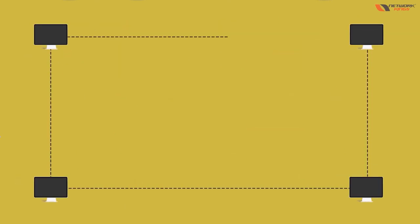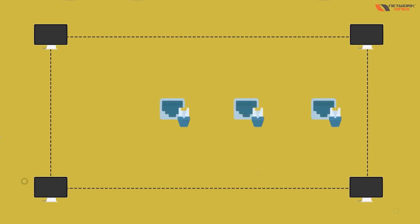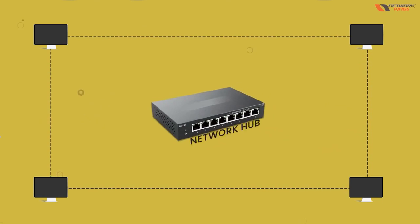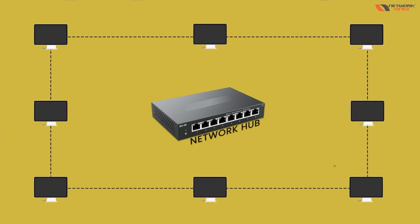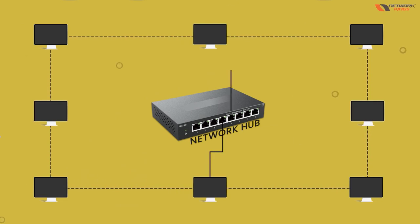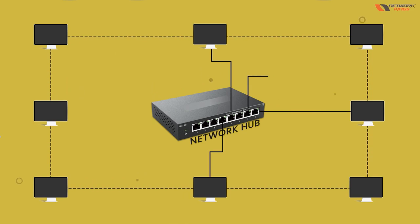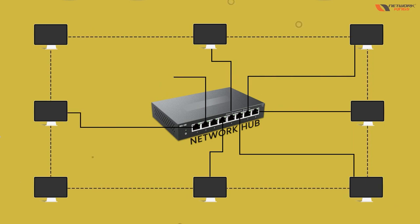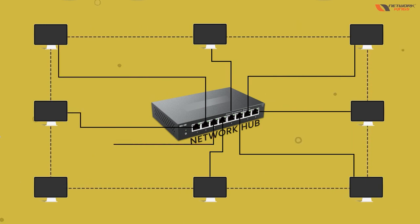After that, if we want to connect all the computers together, we buy a device called a switch — or earlier it was a hub. But hub has a problem: if you send data to one computer, the data goes to all computers. In a hub, we connect all computers with cables like this.